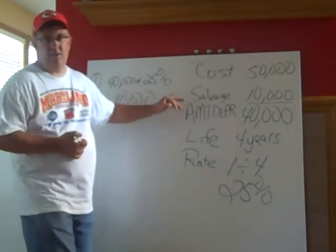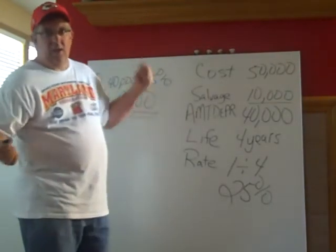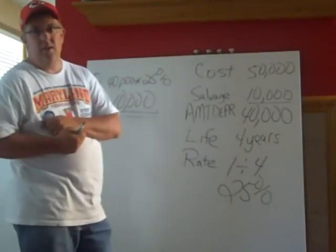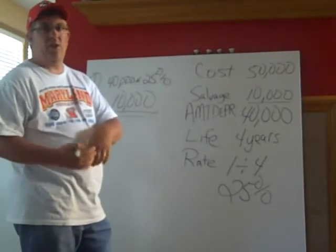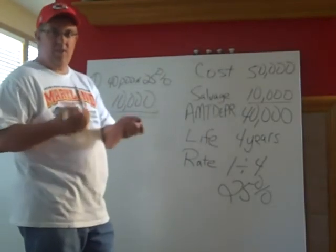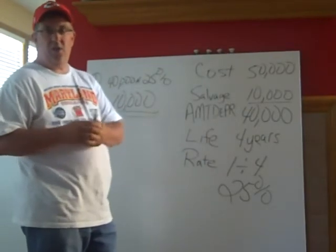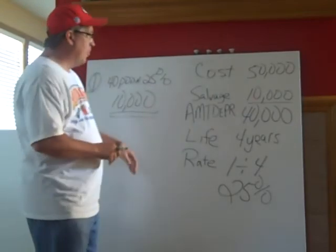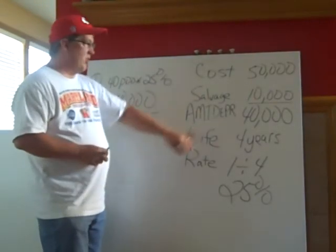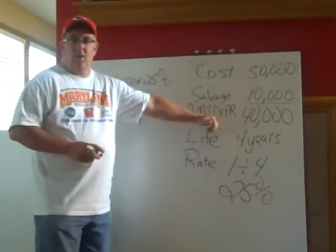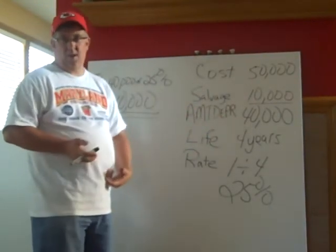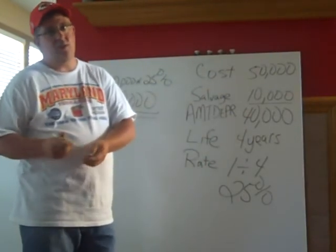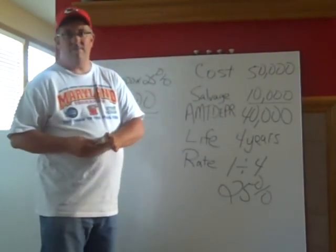So our first year it's $10,000 — and the second year is going to be $10,000, third year $10,000, fourth year $10,000. Our depreciation expense is $10,000 each year. Our accumulated depreciation at the end of four years is going to be $40,000. And that is all there is to straight-line depreciation.